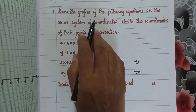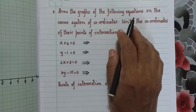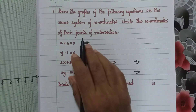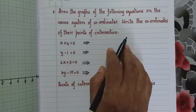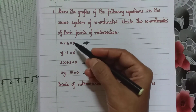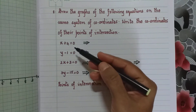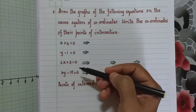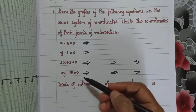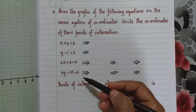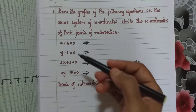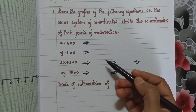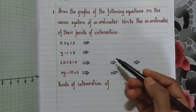Question 8 asks us to draw the graphs of the following equations on the same system of coordinates and write the coordinates of their points of intersection. Looking at the given lines — x plus 4 equal to 0, y minus 1 equal to 0, 2x plus 3 equal to 0, and 3y minus 15 equal to 0 — all of them can be written in the form x equal to a constant or y equal to a constant. So first we convert each one into that form.